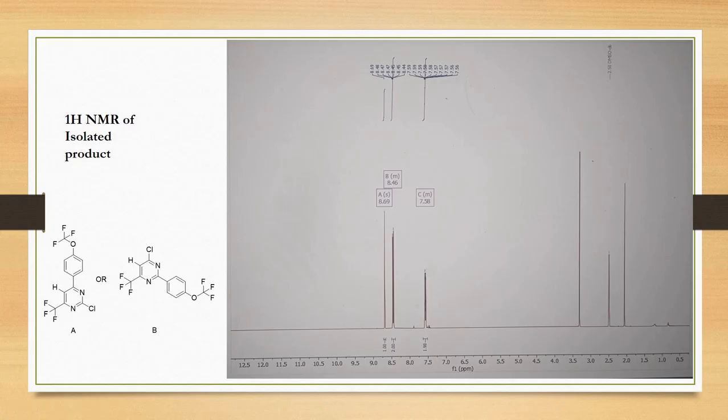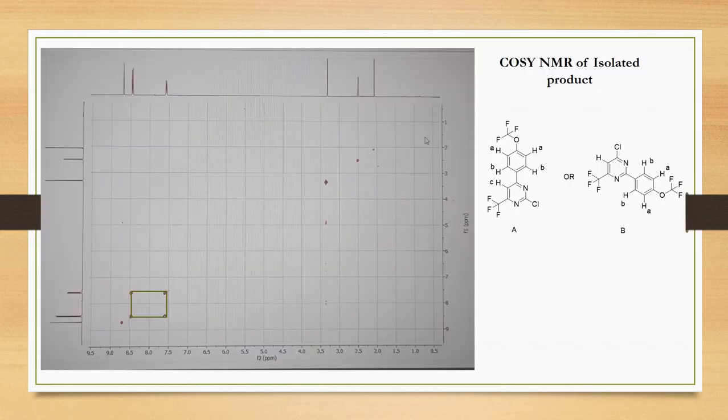Let's see the COSY NMR. COSY NMR is useful for checking vicinal interaction, so there are two vicinal protons HA and HB. You can see easily that this multiplet proton is interacting with this proton, so therefore there is formation of a rectangle if you connect these peaks. This is because of the interaction between hydrogen A and B.